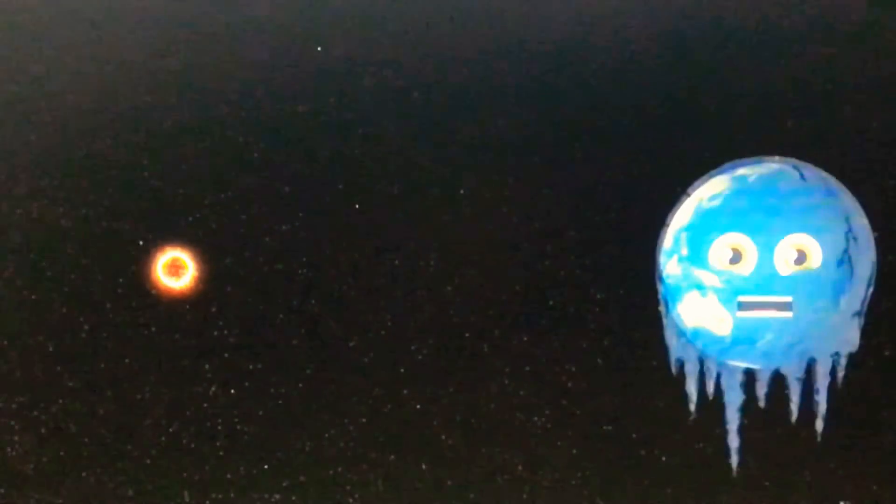Stars that are smaller and much cooler than the Sun have a habitable zone much closer to their star. Stars that are hotter, much larger and more massive than the Sun have their habitable zone much farther from their star.